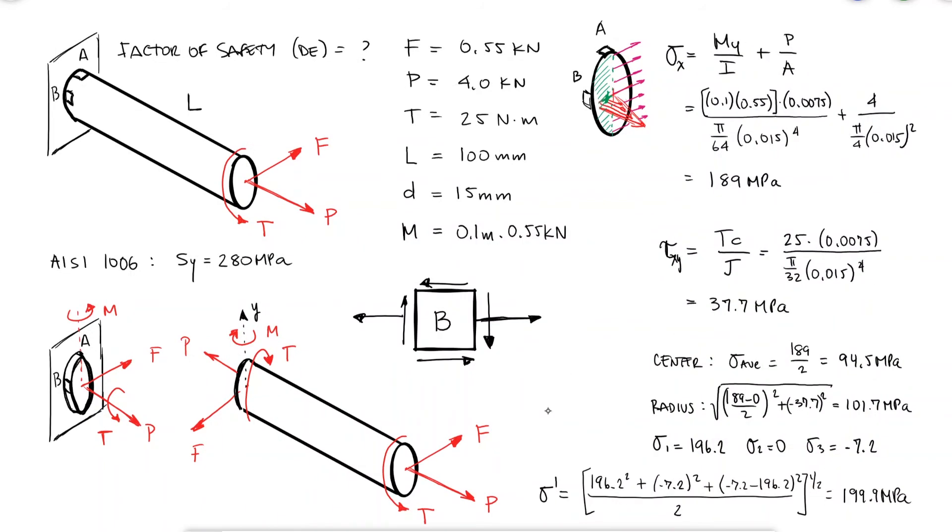Remember that σ2 is not always zero. Both in-plane principal stresses can be positive or negative, meaning that either σ3 or σ1 are zero, respectively.